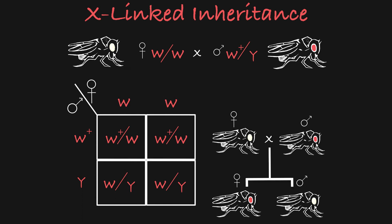This particular phenomenon, when the male and female phenotypes switch from one generation to the next, is called crisscross inheritance, which is a unique feature of X-linked inheritance.